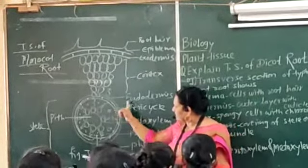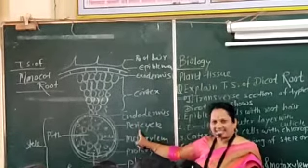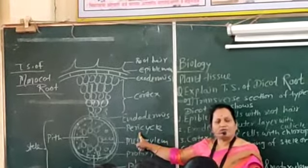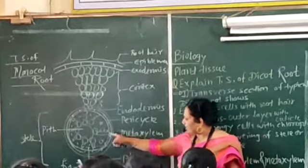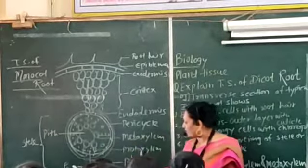And stele consists of endodermis, pericycle. These are also parenchymatous cells, with xylem and phloem in the stele.